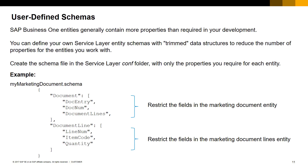The newly created schema file has to be copied in the serviceLayer.conf folder. You can point to your specific schema file from the configuration file of the service layer, or specify it in the header of each one of your requests. To get more details on the user-defined schemas feature, please check the SAP Business One Service Layer user manual.